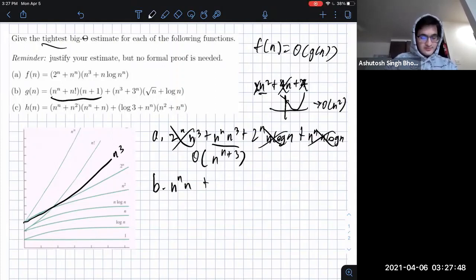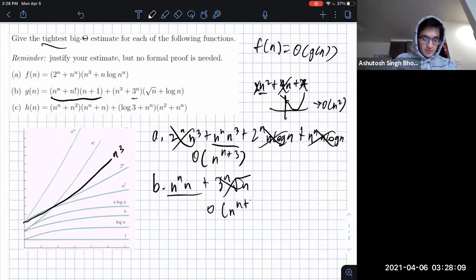So then you would have, oh no, sorry. 3 to the n goes faster than n cubed, so you have 3 to the n and the square root of n. And so which goes faster at the end of the day? I believe that would be n to the n goes faster than 3 to the n, and n goes faster than square root of n. So it would be this at the end of the day. So this would be O of n to the n plus 1.